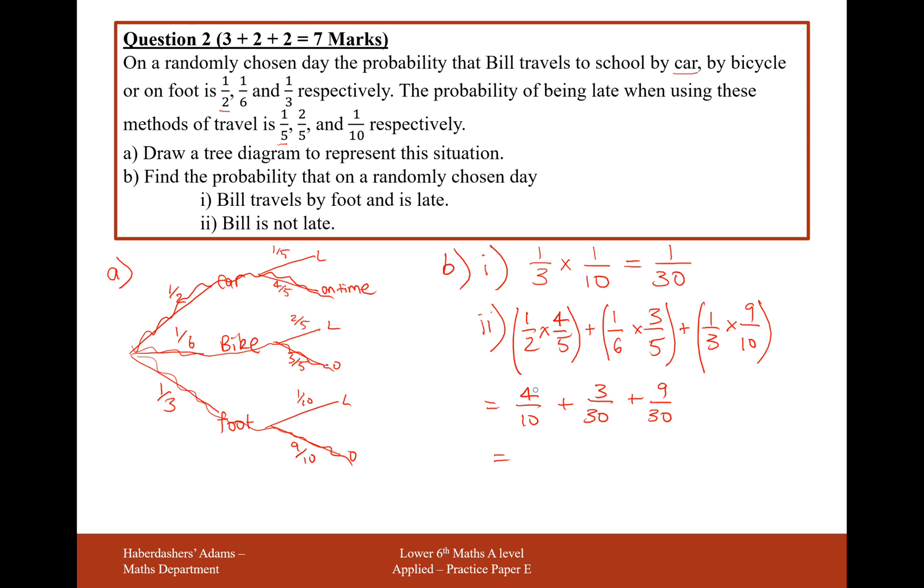So in this case here, this is going to be twelve thirtieths. So twelve, fifteen, twenty-four. Twenty-four out of thirty. Or simplifying this, dividing by six, and we're going to get four over five, or eighty percent. So the probability that Bill is not late or he's on time is four fifths, or eighty percent.